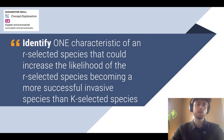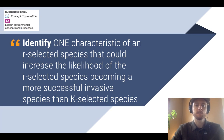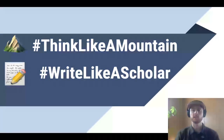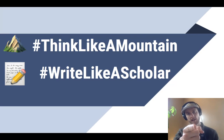Today, the skill we'll practice is concept explanation: identify one characteristic of an R-selected species that could increase the likelihood of it becoming a more successful invasive species than a K-selected species. Our second practice skill is data analysis — we have a data table of zebra mussels and unionid mussels, and we want to describe the relationship between zebra mussel and unionid mussel population density in the Hudson River. Thanks for watching today. Don't forget to like this video if it was helpful and subscribe for future APES video notes. And as always, think like a mountain, write like a scholar.